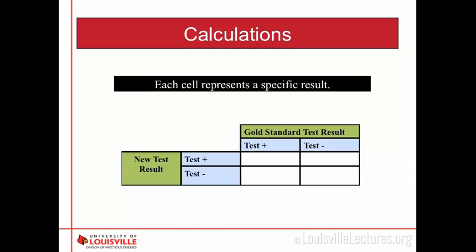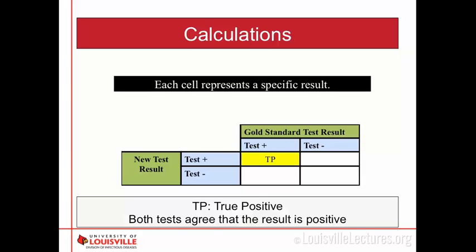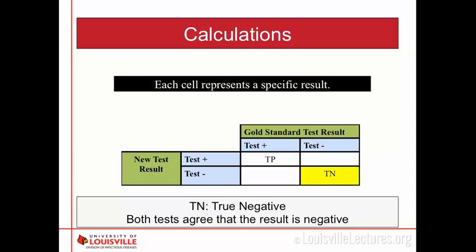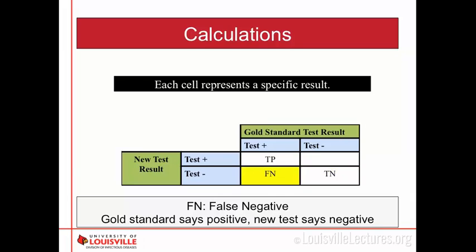Each cell represents a specific result. The first cell, TP, stands for true positives — these are cases where both tests agree: the patient tested positive on the new test and the gold standard. Your true negatives are when both tests agree on a negative result. Your false negatives are where, according to the gold standard, the patient tested positive, but the new test says negative.